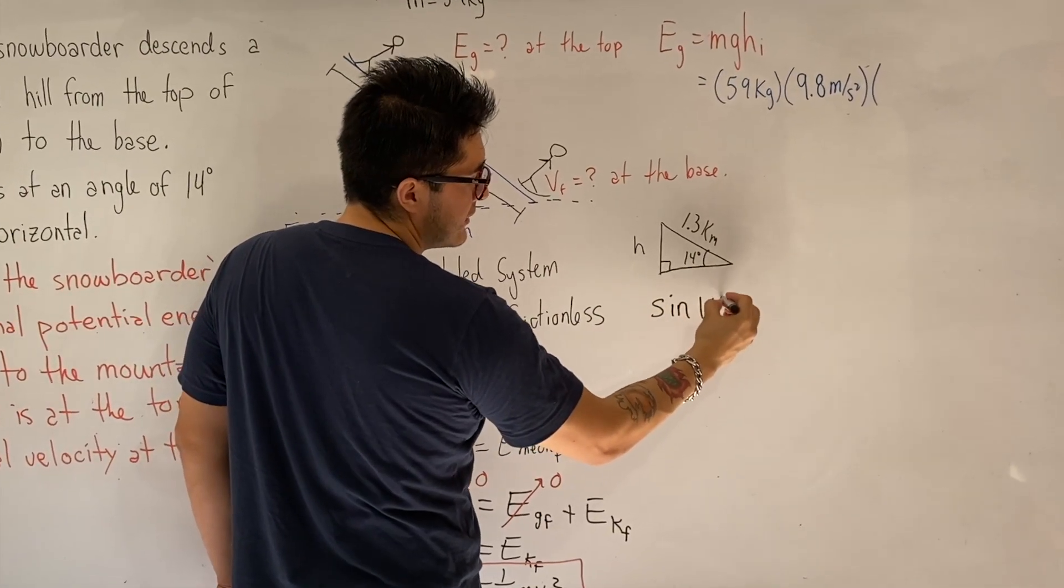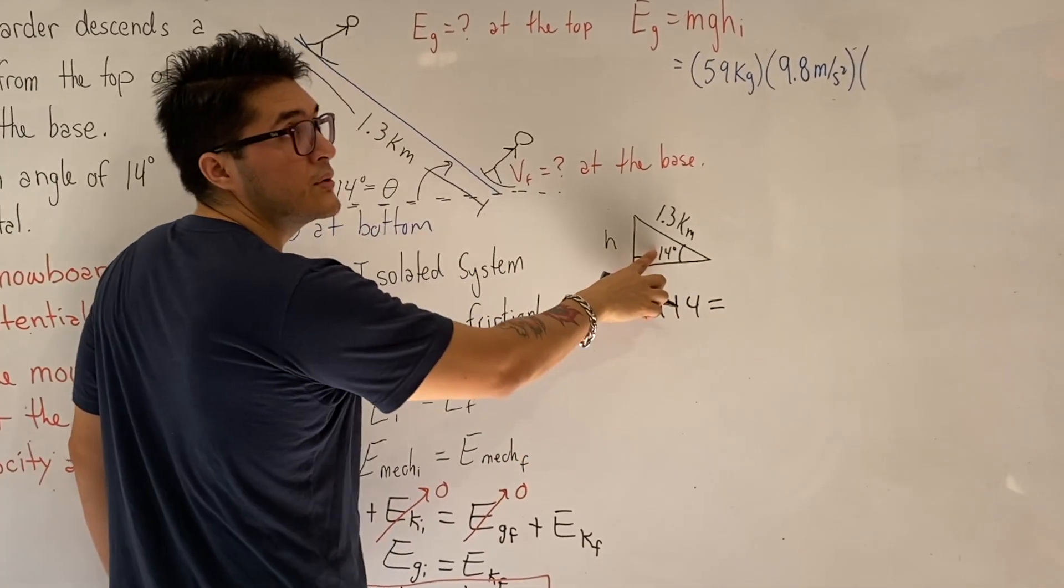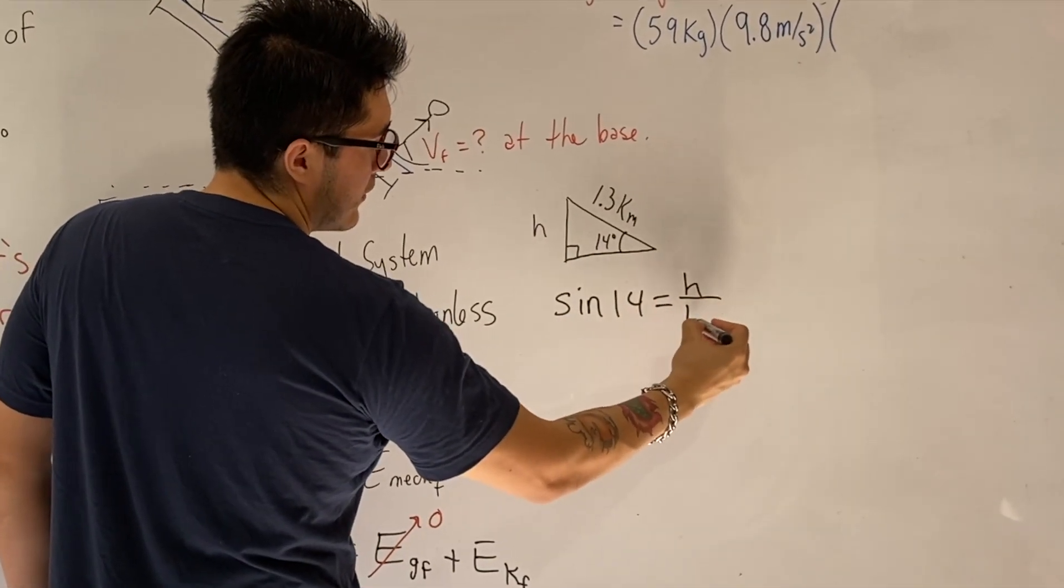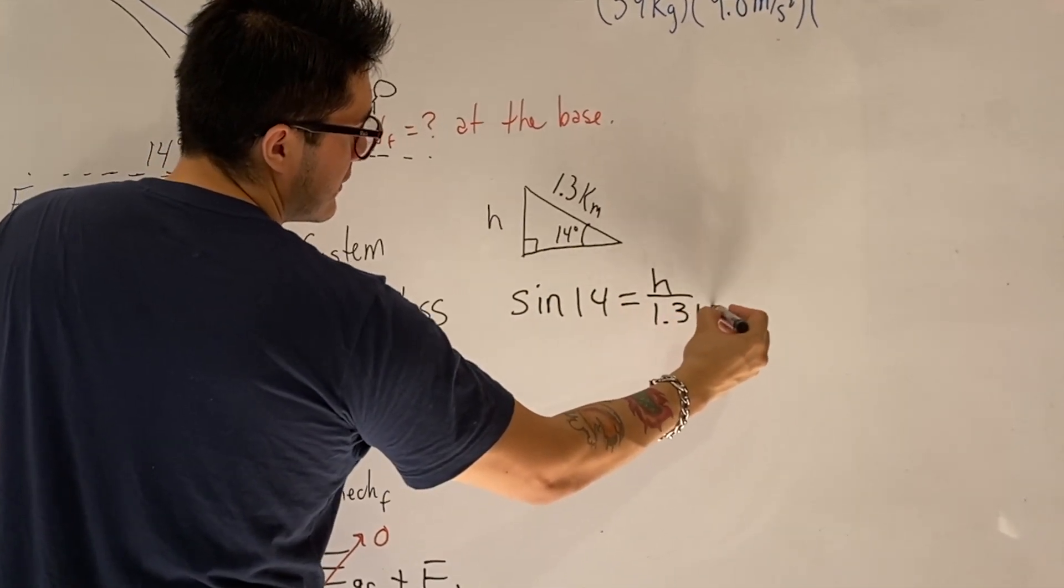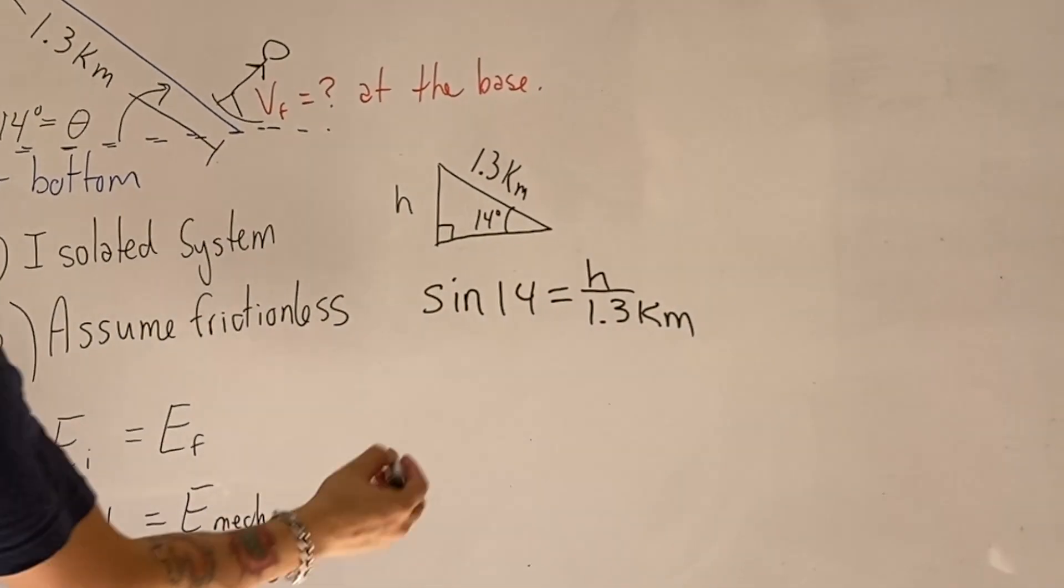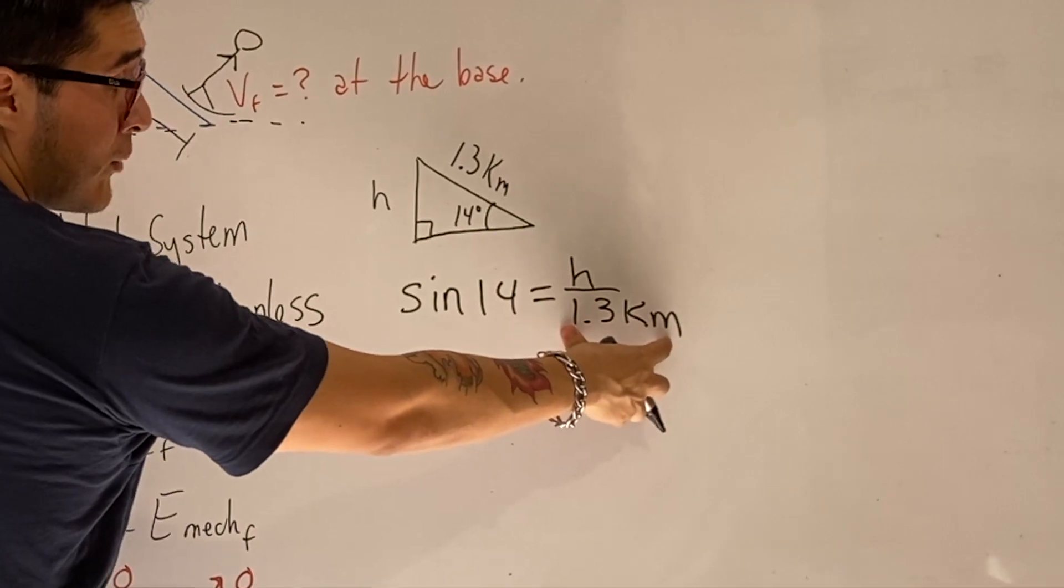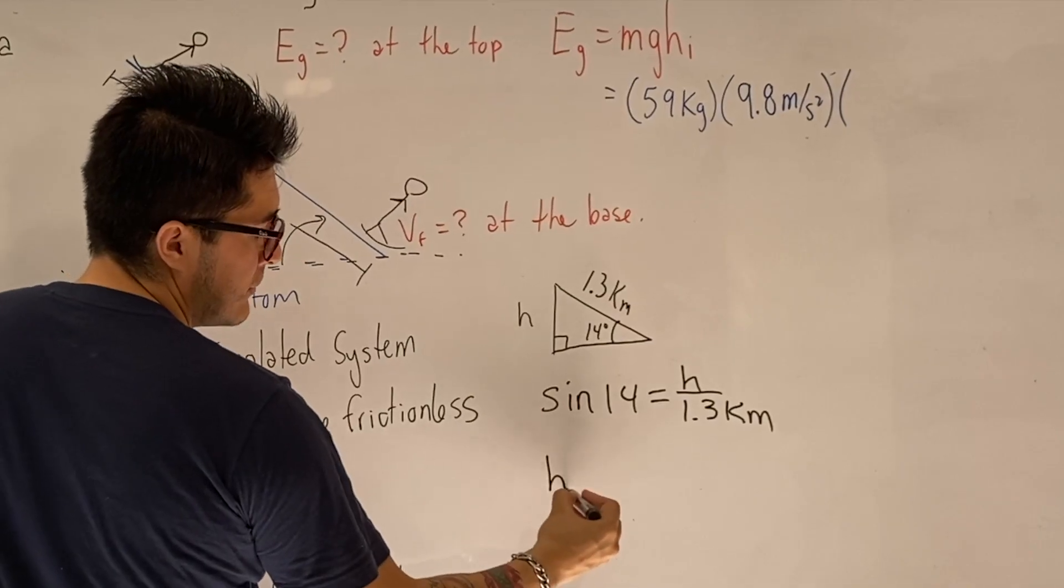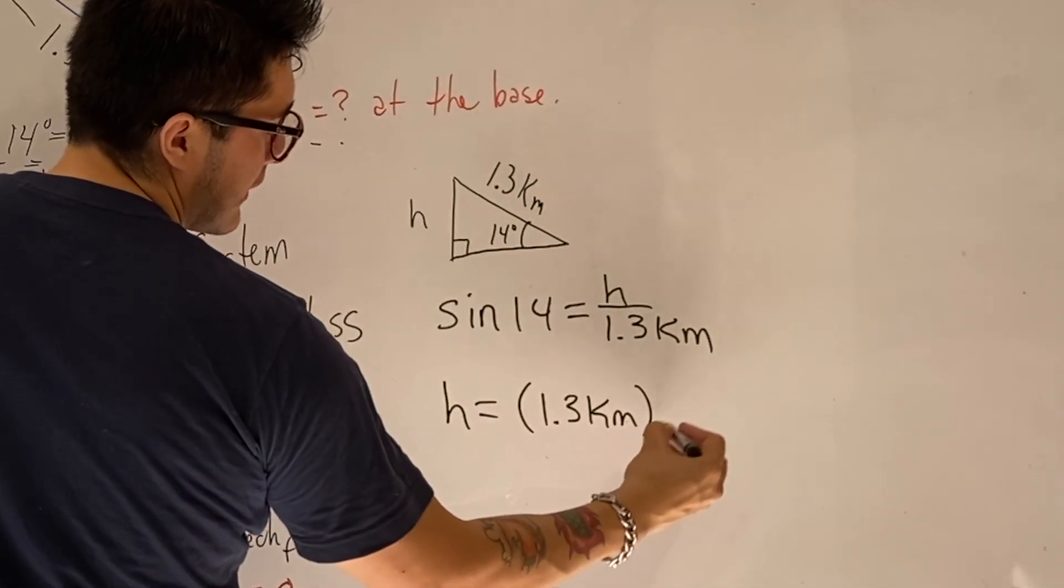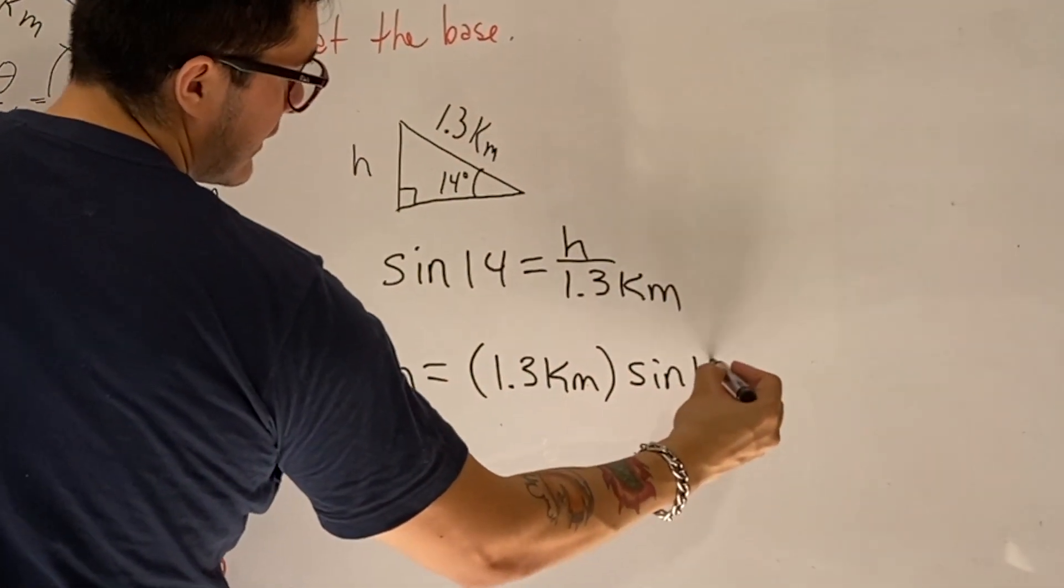So sine of 14 degrees is opposite over hypotenuse. And isolating for the height, I can multiply both sides by 1.3. So my height will be 1.3 kilometers times sine 14.